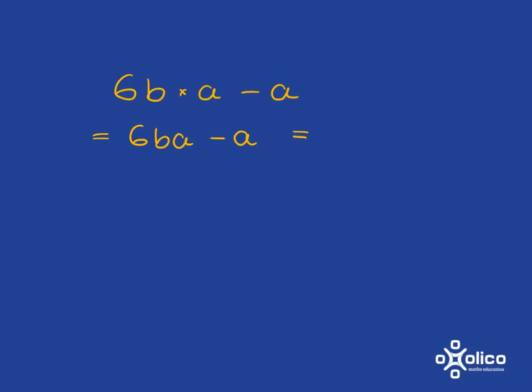And then most people like to, for conventional algebra, to put their letters in alphabetic order. So instead of saying 6ba, it's just a bit prettier to say 6ab minus a.